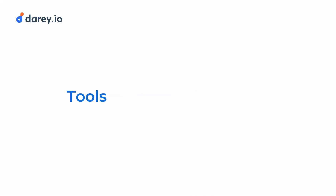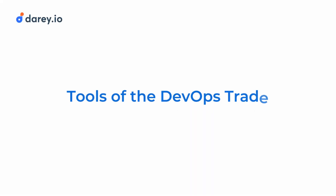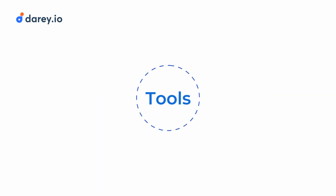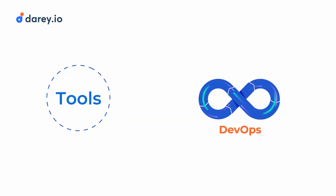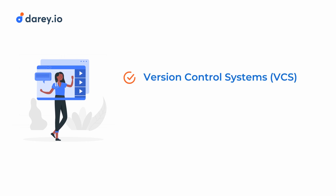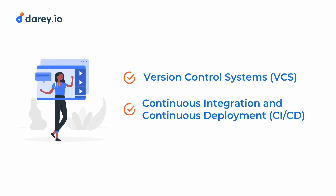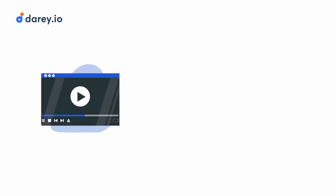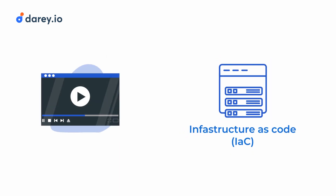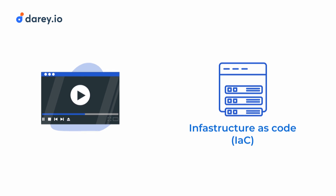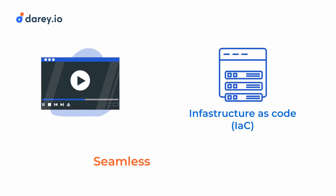Welcome back to our series, Tools of the DevOps Trade, where we explore the various tools that help drive successful DevOps practices. In previous videos, we've discussed version control systems and CI/CD. In this video, we'll explore what infrastructure as code is and understand how all the concepts work together to create a seamless, efficient DevOps environment.